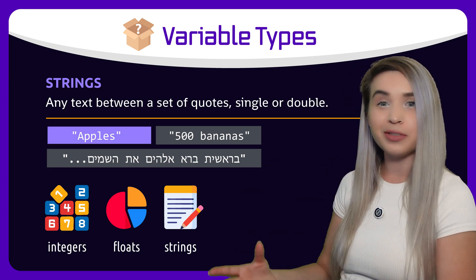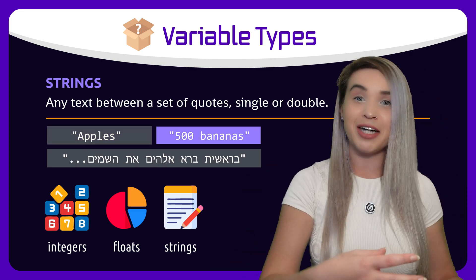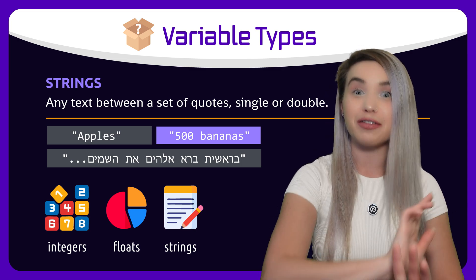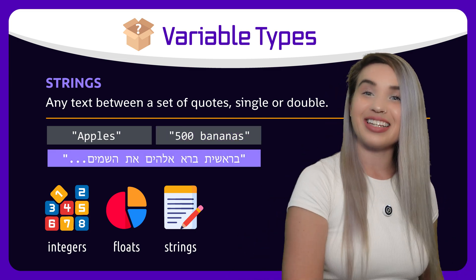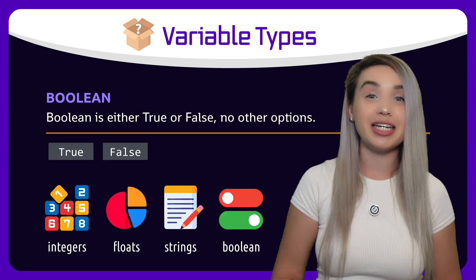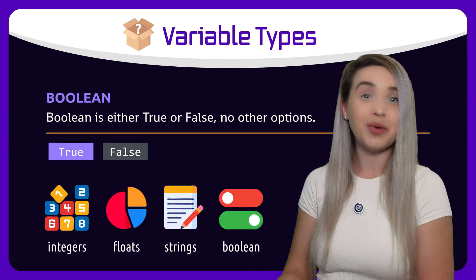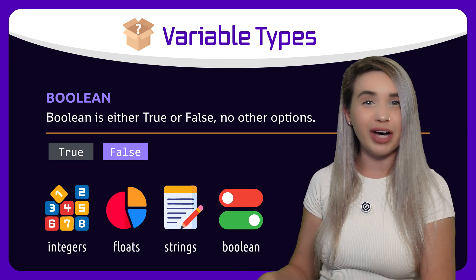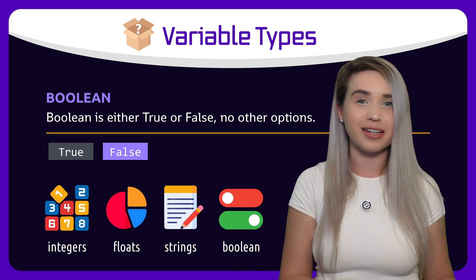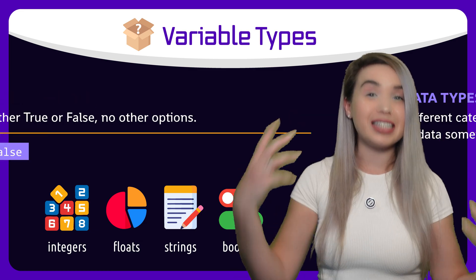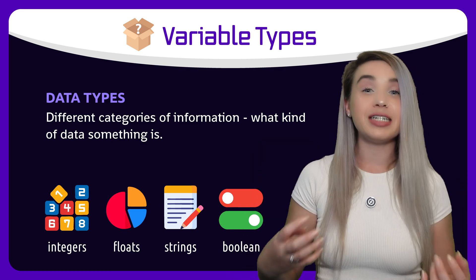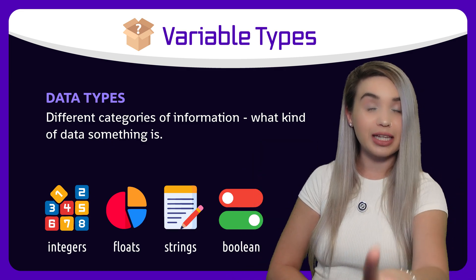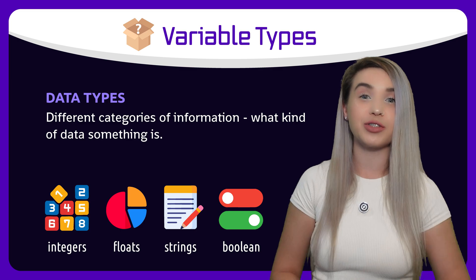For example, 'apples', '500 bananas', and even the entire book of Genesis. Then lastly, we have Boolean, which can either be true or false — there are no other options, it's just one or the other. And this is what we call data types: different categories of information, and we will see shortly why they're so important.